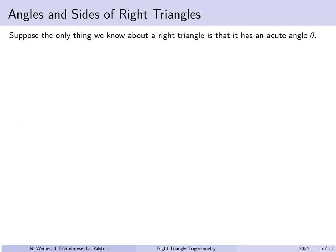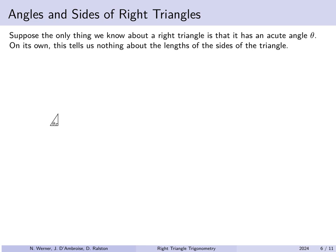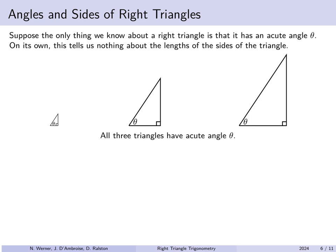Suppose the only thing you know about a right triangle is that it has an angle of theta, where theta is not the right angle but one of the others. This alone does not tell you the side lengths — a tiny triangle and a larger one can share the same angle theta. However, all three such triangles are similar because their angles must add up to 180 degrees, giving the same set of angles. Since they are similar, certain ratios of sides have not changed.